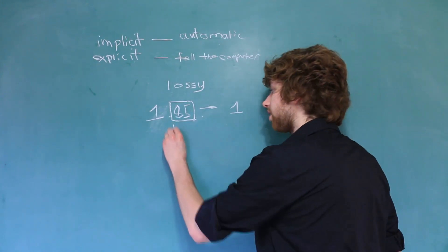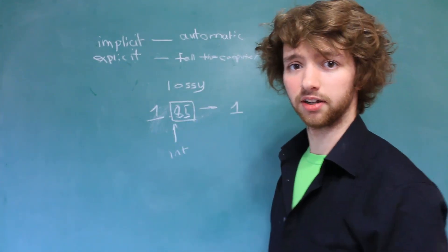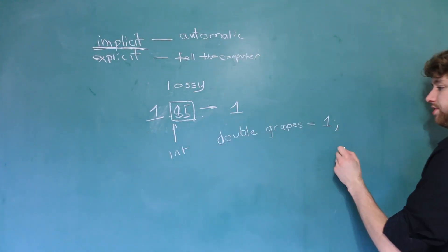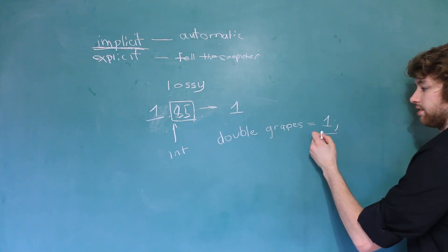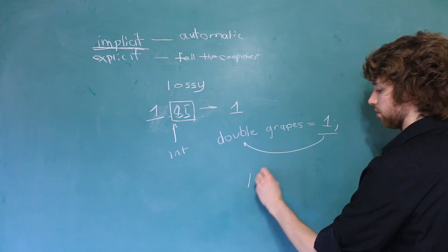A great example of implicit typecasting is if you do something like this. You can see in this situation we are assigning an int to a double so it's automatically going to get stored as 1.0.